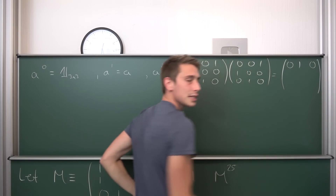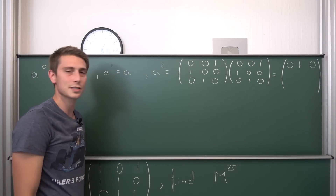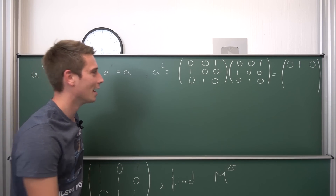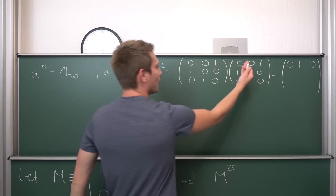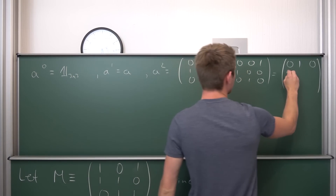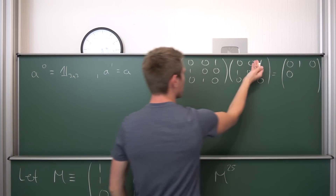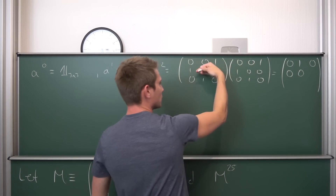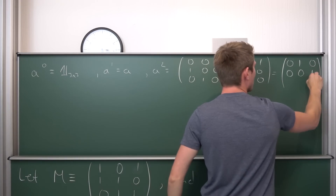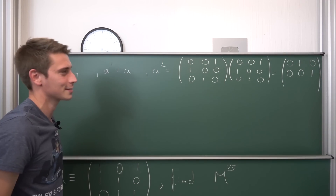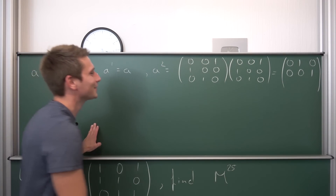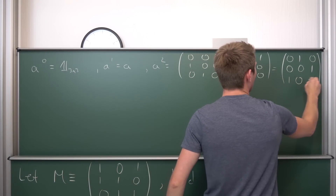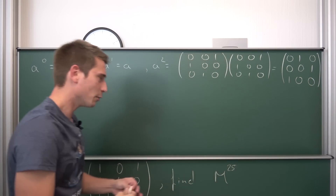If you don't know what matrix multiplication is and how it works, please, it's the wrong video for you. Putting the first column onto the first row gives us 0; onto the second row gives 1; onto the third gives 0. Continuing through all entries, I can see a certain pattern emerging - this is great. Last one: a 1 comes out here and all the other ones are 0.